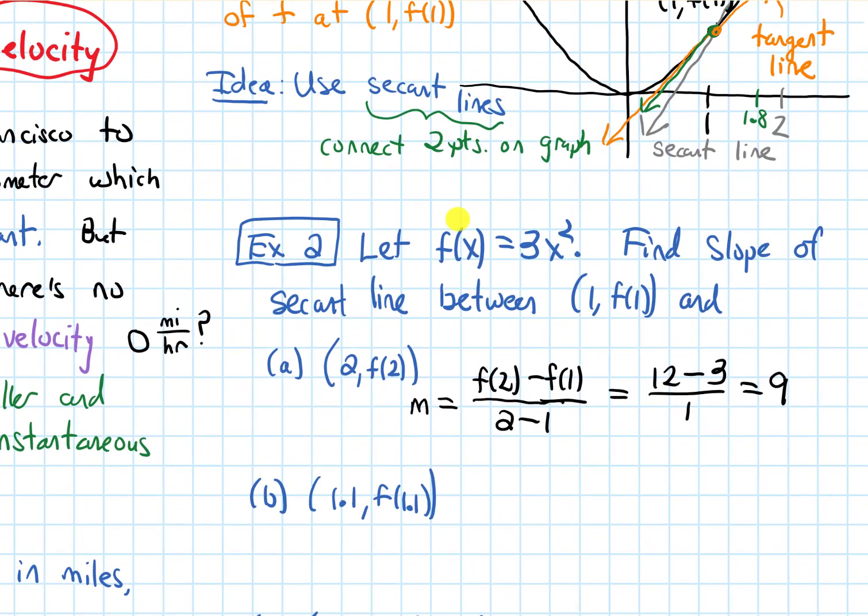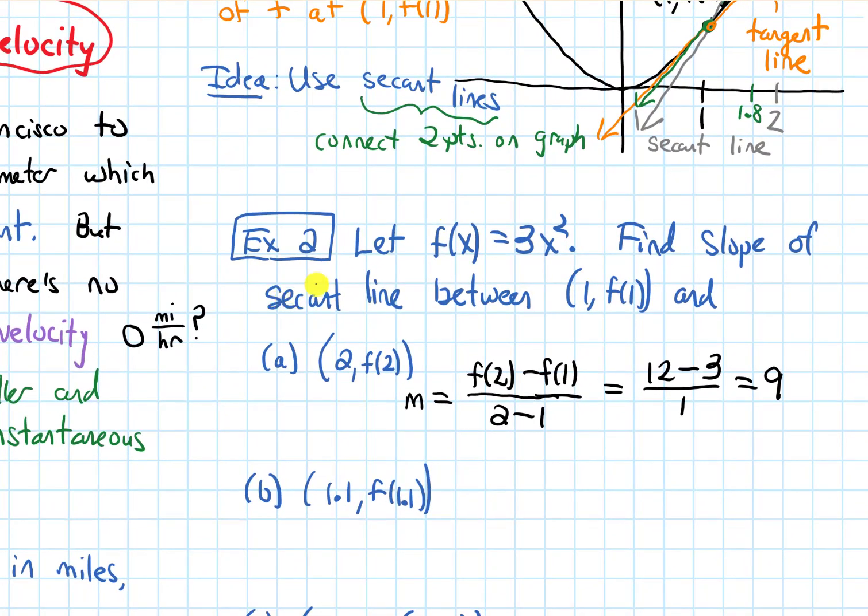So now let's get a better estimate. Now let's find the slope of the secant line between 1 comma f of 1 and 1.1, let's get really close, and f of 1.1. So now my slope is going to be f of 1.1 minus f of 1 on the top, that's the change in y, over 1.1 minus 1 on the bottom, that's the change in x. I've gone ahead and worked out what this is already after plugging into my function and subtracting and dividing, and it's 6.3.